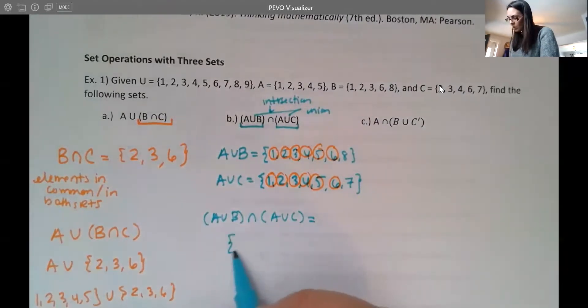So our intersection is one, two, three, four, five, and six.